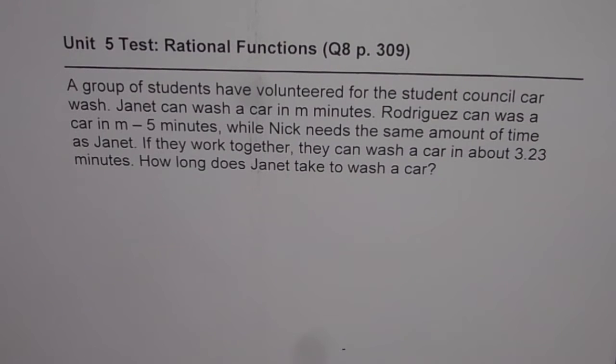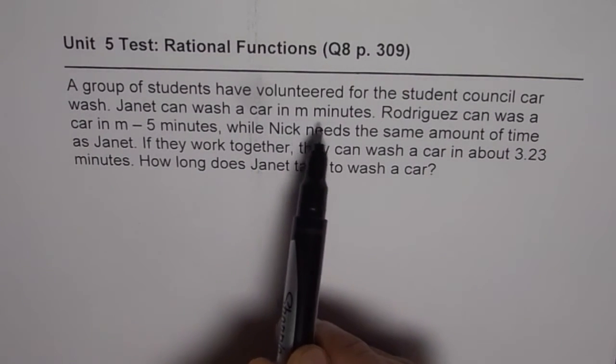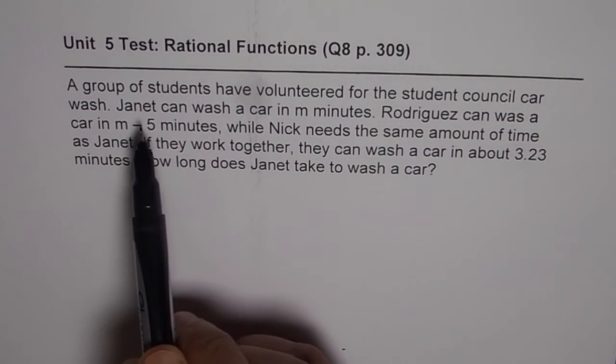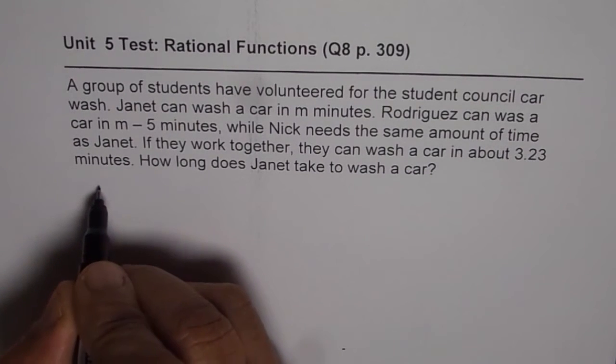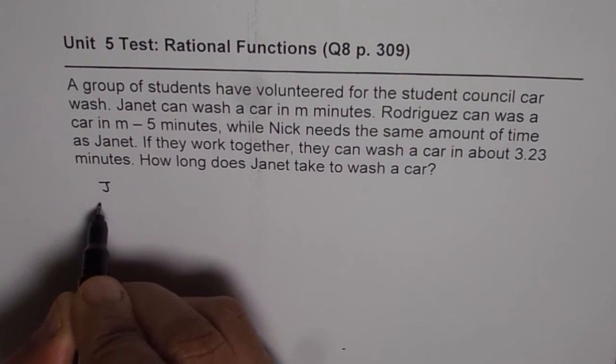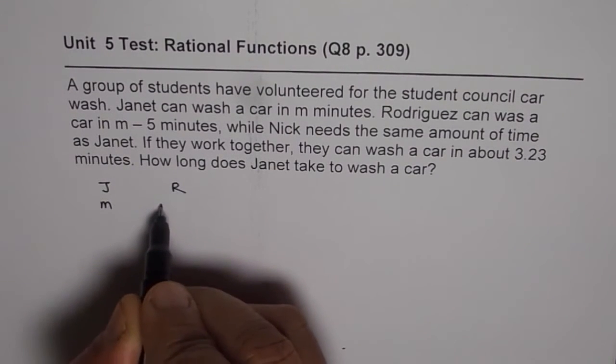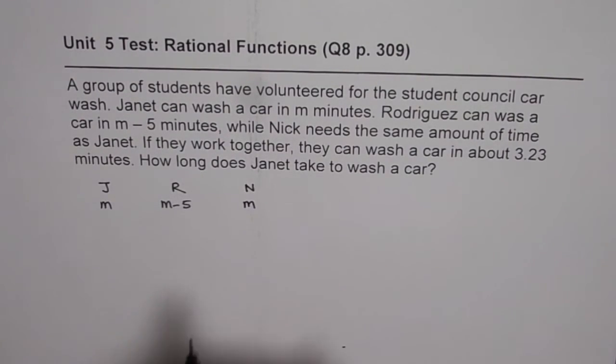Now, these are work done questions, in which you should always be equating the rates. When we say that Janet can wash a car in M minutes, then we need to find how much work can Janet do in 1 minute. What we have here is that Janet can wash the car in M minutes, Rodriguez can do the same job in M minus 5 minutes, and Nick can do it in M minutes.